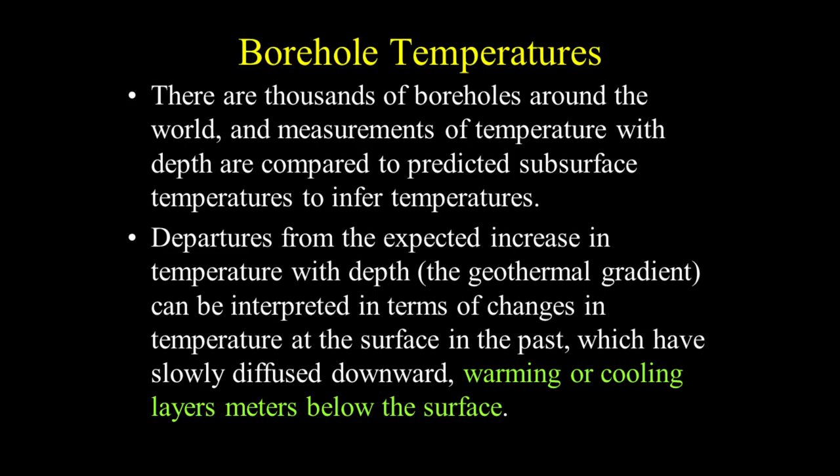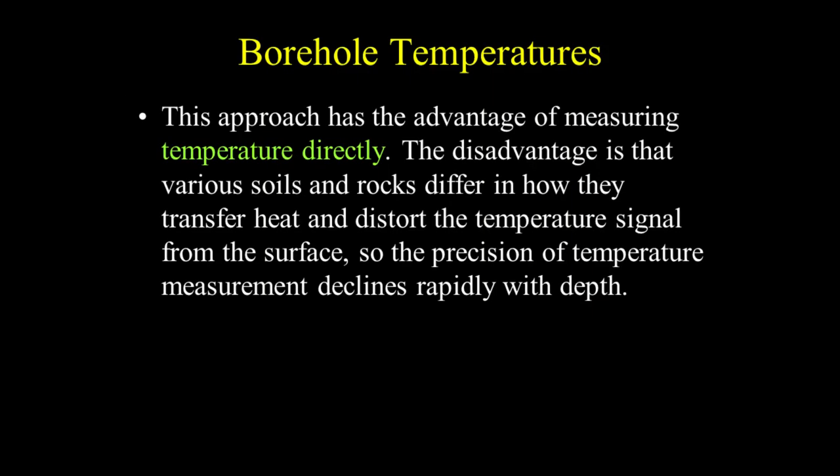Measurements of temperature with depth are compared to predicted subsurface temperatures to infer past temperatures. Departures from the expected increase in temperature with depth, or the geothermal gradient, can be interpreted in terms of changes in surface temperature in the past, which have slowly diffused downward, warming or cooling layers meters below the surface. This approach has the advantage of measuring temperature directly.